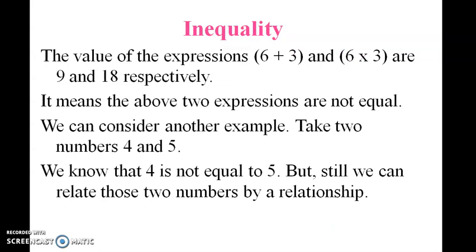(6 + 3) and (6 × 3) are 9 and 18. It means these two expressions are not equal. We can consider another example: take two numbers 4 and 5. We know that 4 is not equal to 5, but we can still relate these two numbers by some relation.